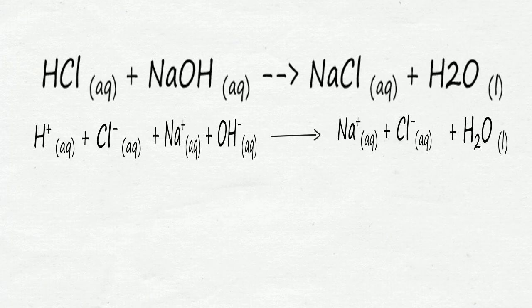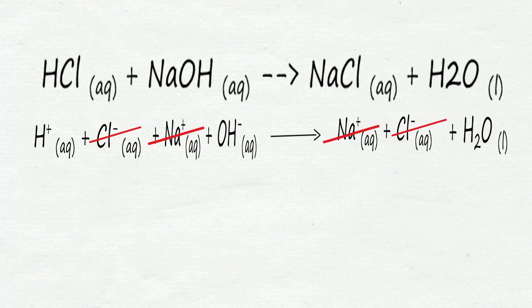So we cancel out sodium ion and chloride ion on both sides. We get the net ionic equation.